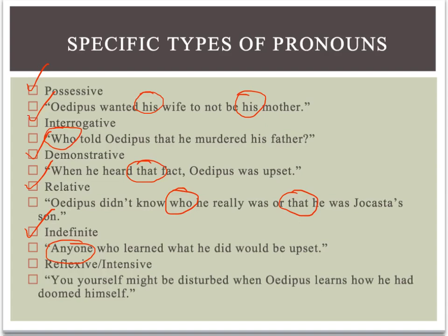The last category of pronouns we're going to talk about are reflexive and intensive pronouns. I put them together because they're the same words — these are those self pronouns: myself, yourself, himself, herself, itself. In the sentence, you yourself might be disturbed when Oedipus learns how he had doomed himself — you heard two of those words: yourself and himself. One is a reflexive pronoun and one is an intensive pronoun. When we say you yourself, we're adding intensity to the pronoun you — yourself in this context is an intensive pronoun that emphasizes its antecedent. The pronoun himself is a reflexive pronoun; it reflects back to an earlier word. What we're really saying is Oedipus learns how he had doomed Oedipus, but we use the reflexive pronoun himself to reflect the action back to the antecedent Oedipus.